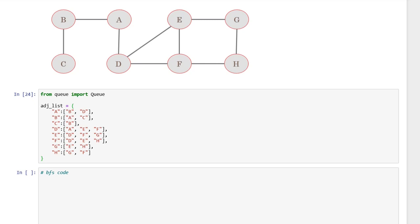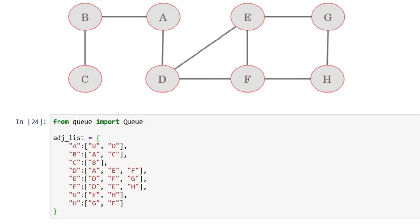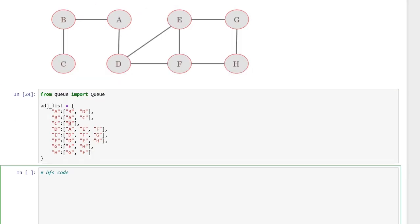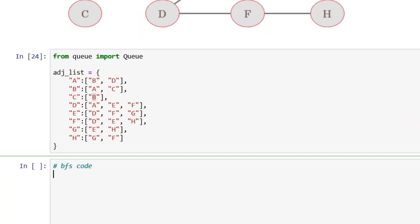We will take the same example with the same nodes and edges: A, B, C, D, E, F, G, and H. First of all, we define our graph in adjacency list format. I created a dictionary in which each vertex stores its adjacent vertices. For vertex A, the adjacent vertices are B and D. For vertex B, the adjacent vertices are A and C, and similarly for all other vertices.